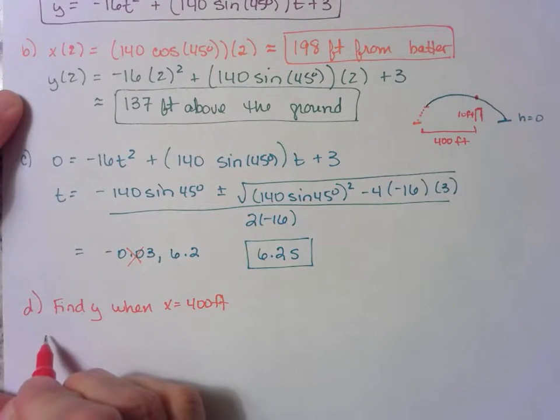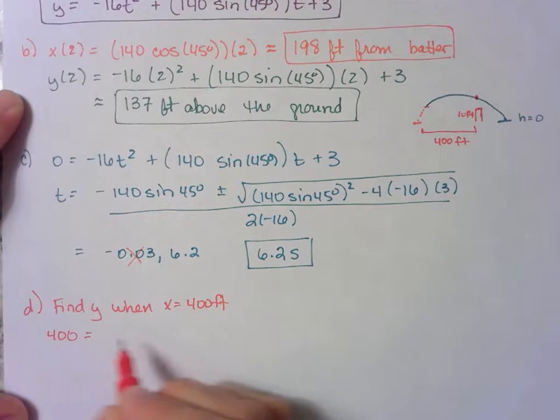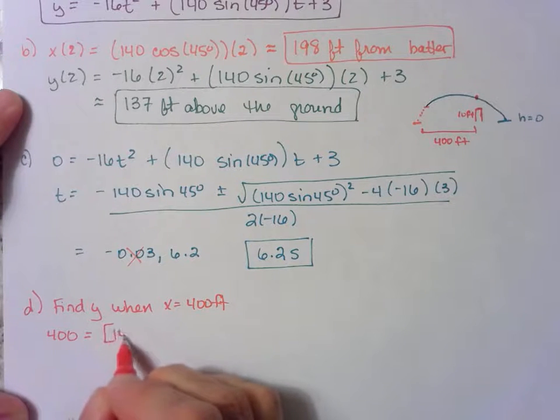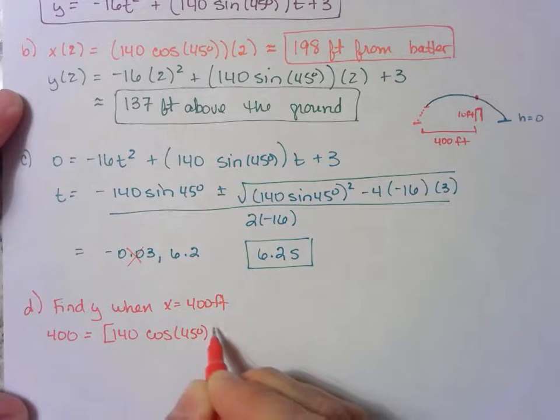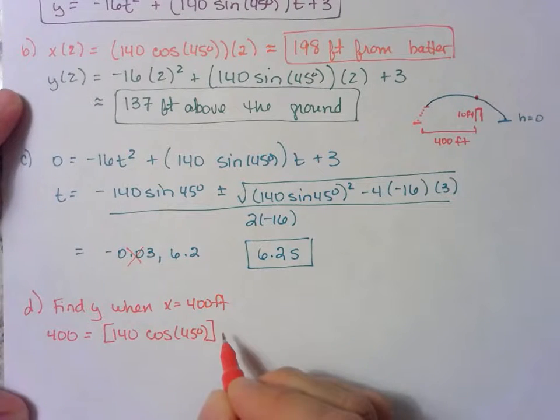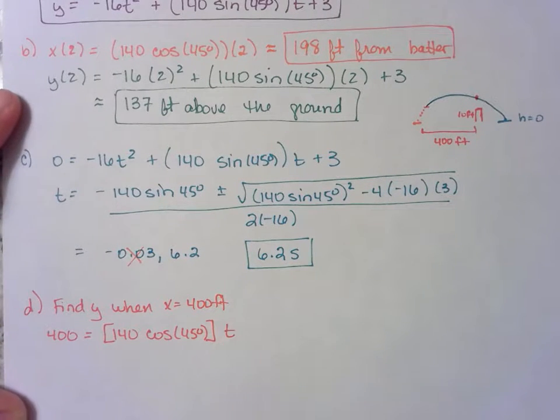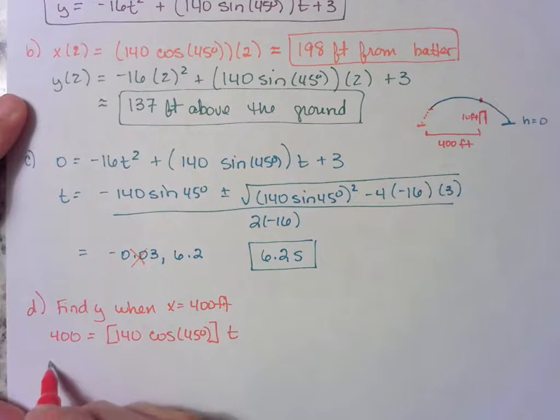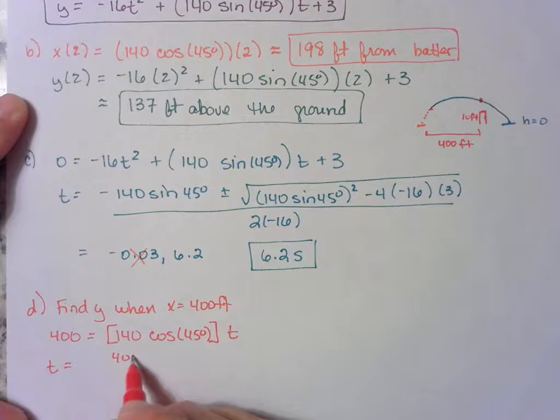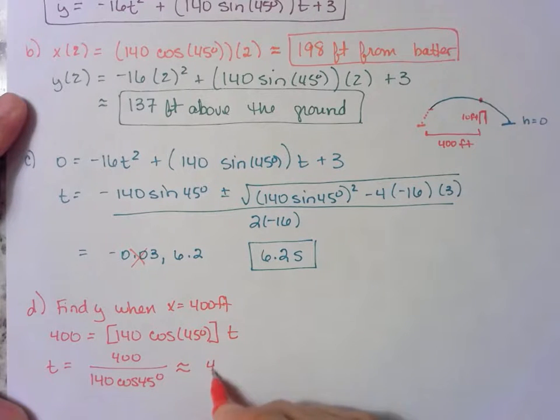So 400 is equal to 140 cosine 45 t. So what we want to do is solve for t, which means we have t is equal to 400 divided by all of this. You get approximately 4.04 seconds.